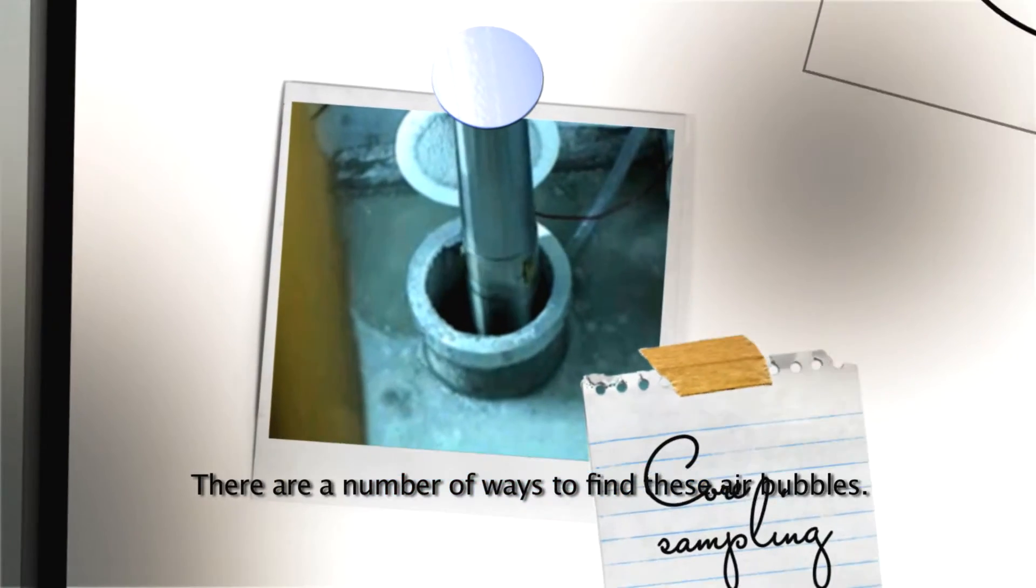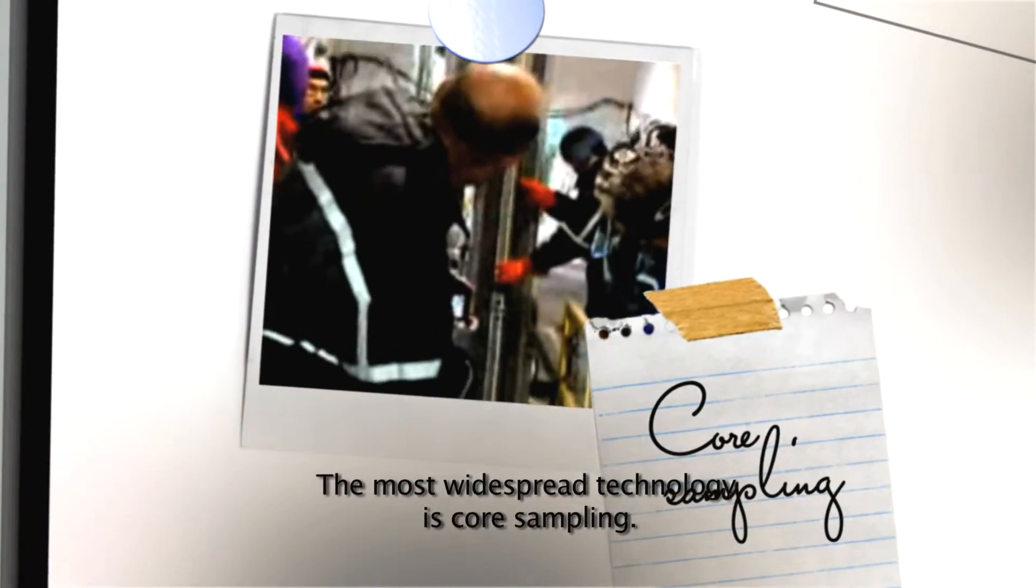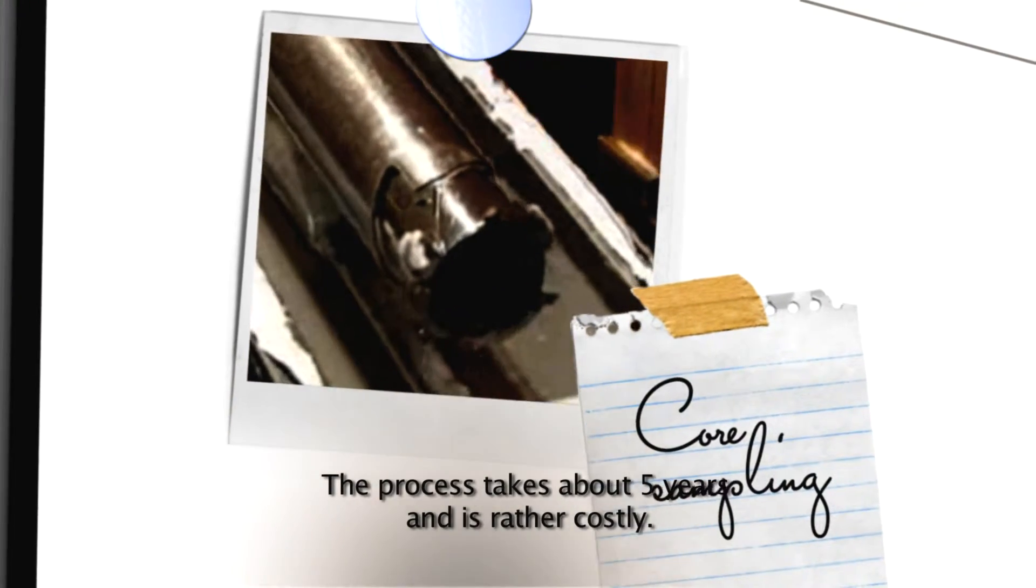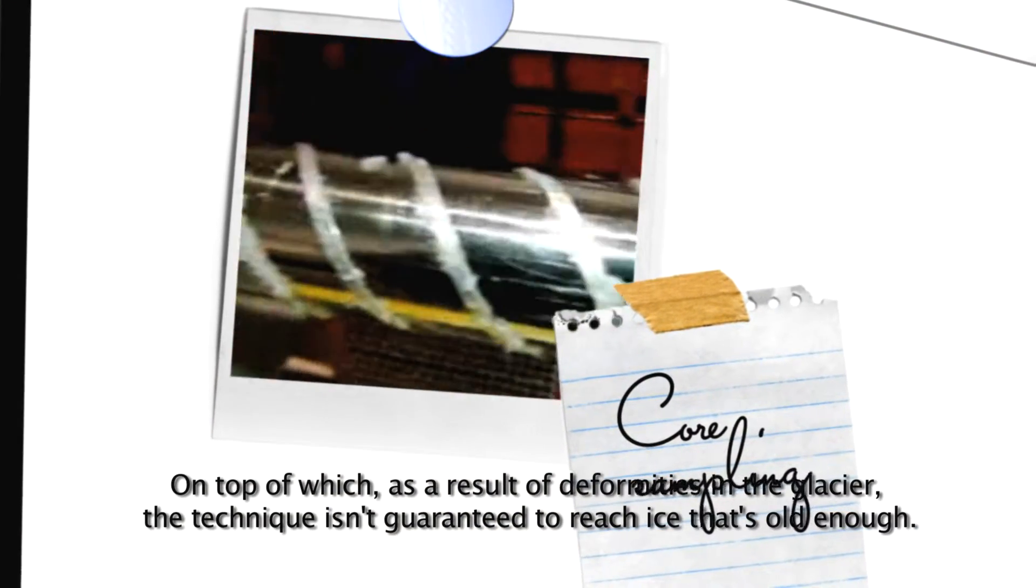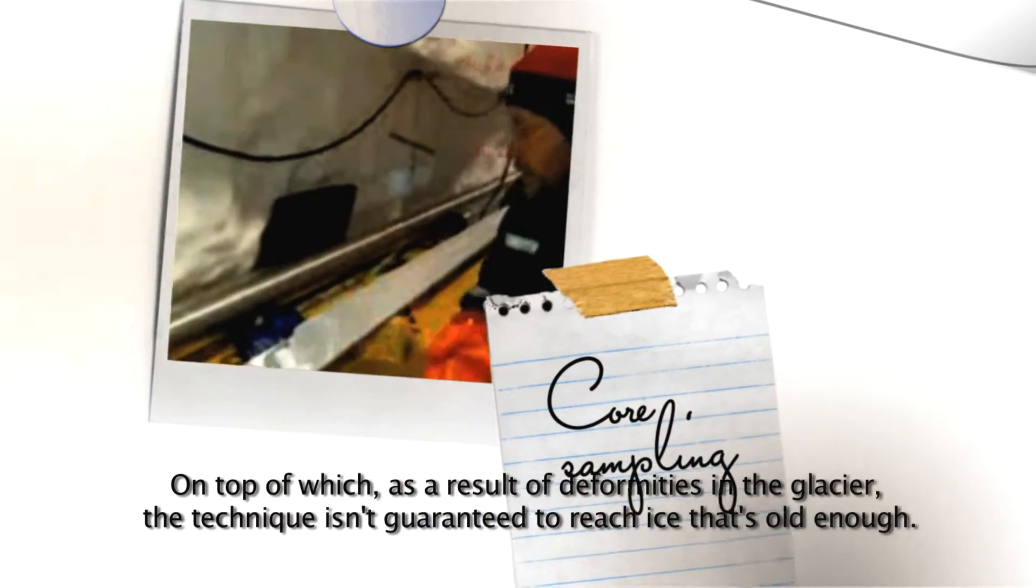There are a number of ways to find these air bubbles. The most widespread technology is core sampling. The process takes about five years and is rather costly. On top of which, as a result of deformities in the glacier, the technique isn't guaranteed to reach ice that's old enough.